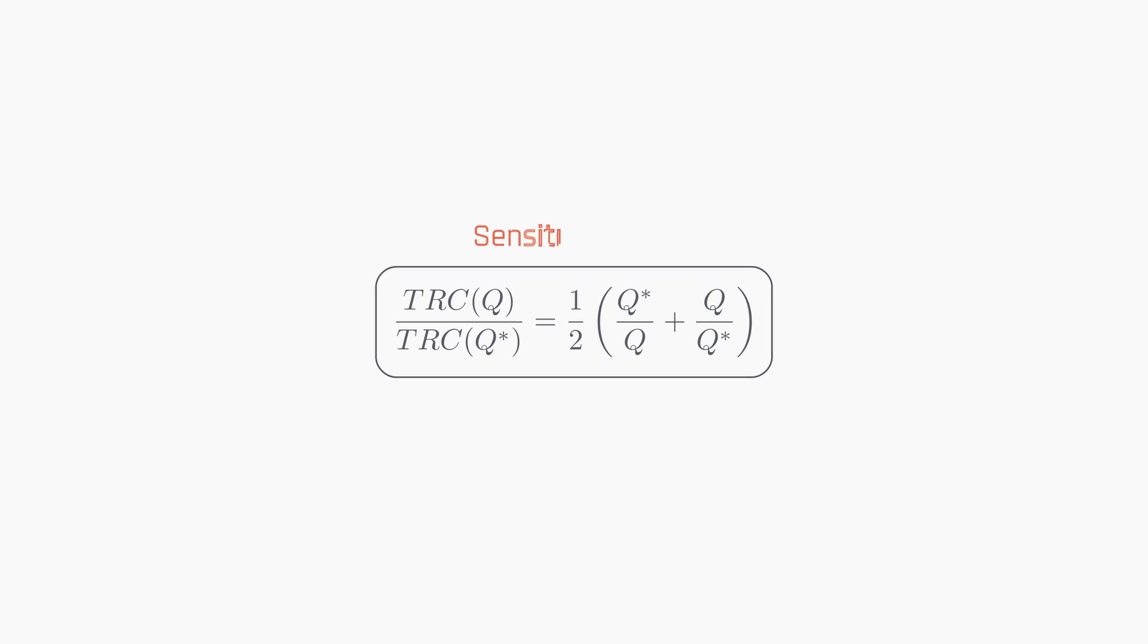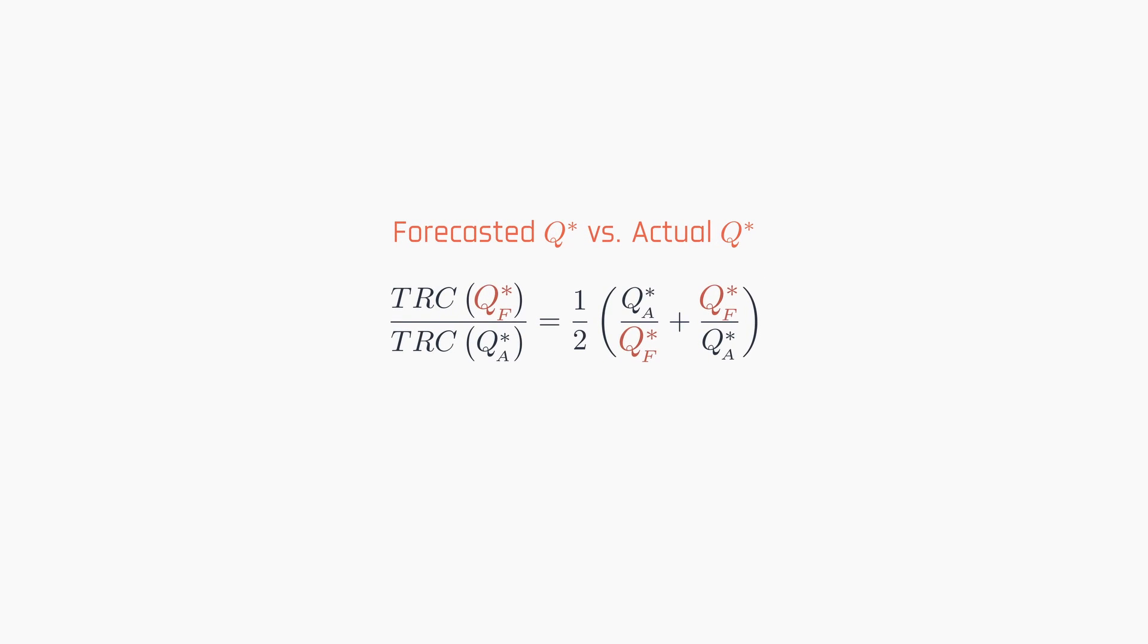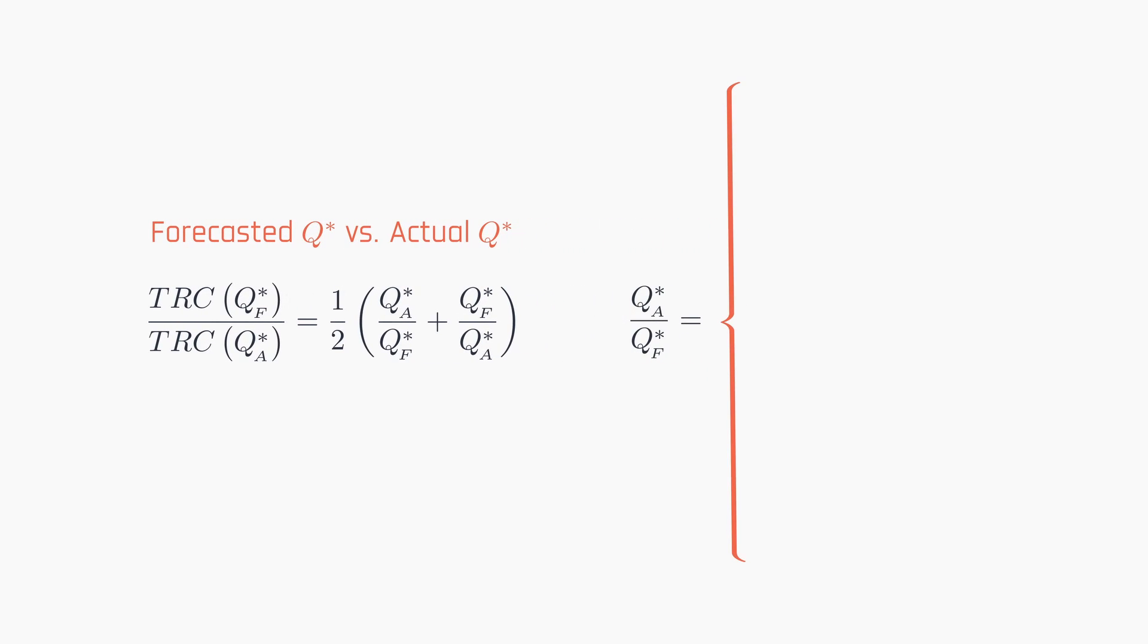We've already explored how the EOQ model responds to adjustments in q. Now, let's examine the cost sensitivity of the model to errors in parameter estimation. We'll assess this by comparing the forecasted q star, which is the optimal quantity determined using erroneous parameters, with the actual q star, the optimal q we would have calculated if we had known the correct parameters. Accordingly, the ratio of the actual q star to the forecasted q star might differ from 1 because of errors in estimating annual demand, ordering costs, holding costs, or a combination of these.